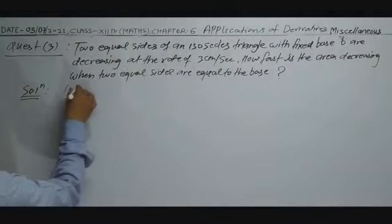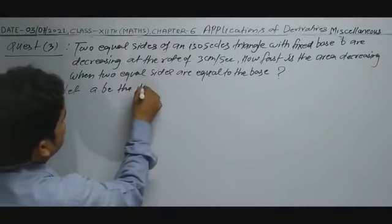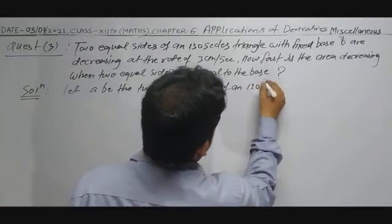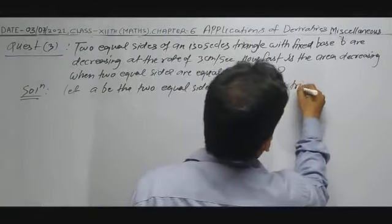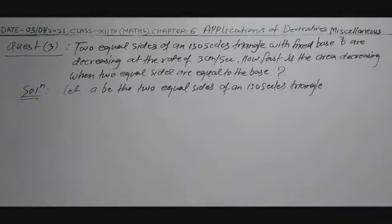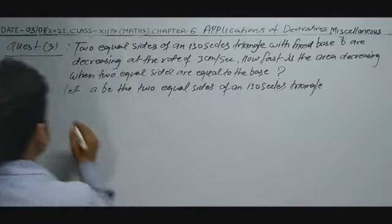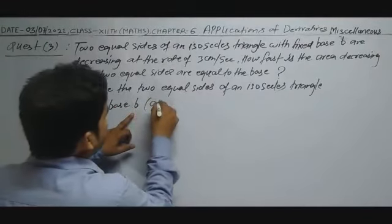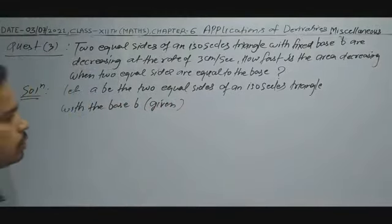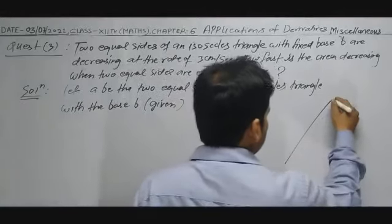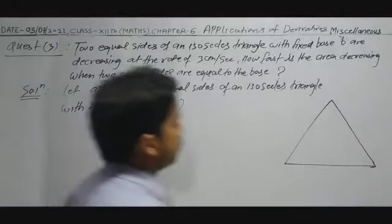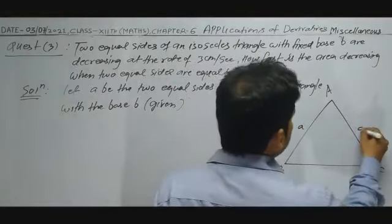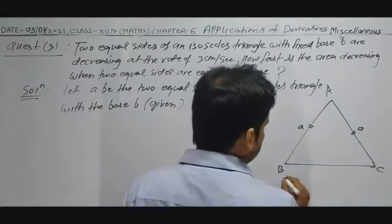Let small 'a' be the two equal sides of the isosceles triangle with base B. Consider triangle ABC as the isosceles triangle where small 'a' are the two equal sides and B is the base length.